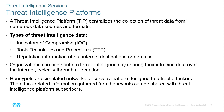Threat Intelligence Platforms (TIPs) allow centralized collection of threat data to be shared with others. The main types of threat intelligence data are: IOCs (Indicators of Compromise), tools, techniques, and procedures (TTPs), and reputation information about internet destinations or domains. The goal is that when a compromise occurs and data is collected, it can be shared with both government and private sector legitimate users so they can better defend against threats.